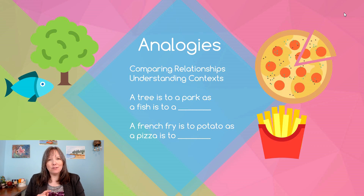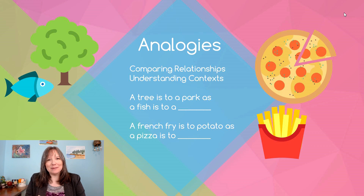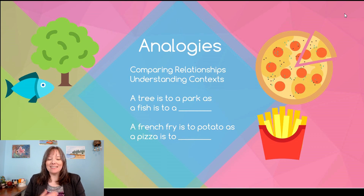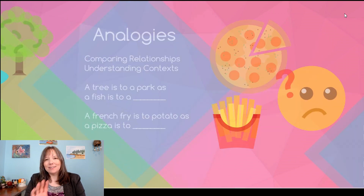Perhaps a little bit more tricky: a french fry is to potato as a pizza is to blank. A french fry is a highly processed potato. A pizza has a lot more ingredients than a french fry, so perhaps we have multiple correct answers. Perhaps we're thinking tomato sauce — a pizza is to tomato — or we're thinking about the wheat in the crust, or different herbs and spices, or different toppings, or even the cheese itself. Or perhaps you want to be more generalist and say a french fry is to potato as a pizza is to a garden.